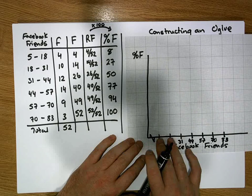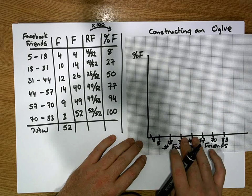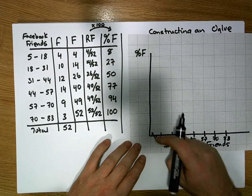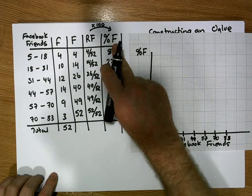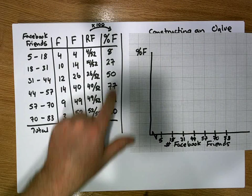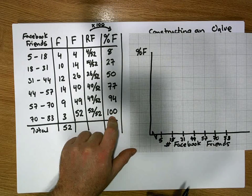The width does not represent 13 and it's not the same as the width of each of these intervals. Now on the vertical axis, we want the vertical axis to represent percentages. I suppose the best way to do this is maybe to graduate this in blocks of 10.